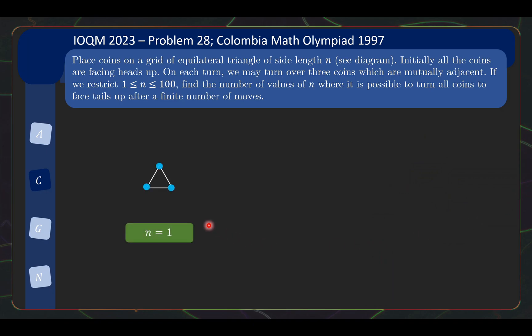So for n equals 1, you have the triangle over here. And obviously, it's possible to turn all the coins from heads to tails by just picking that triangle itself. For n equals 2, it takes slightly more work. But you can see that one possible solution is to hit each small triangle exactly once. And this will turn all the coins to tails up.